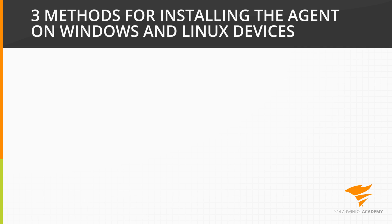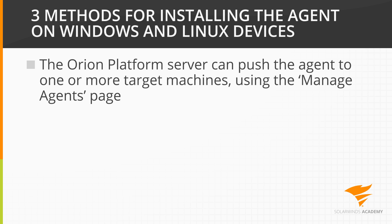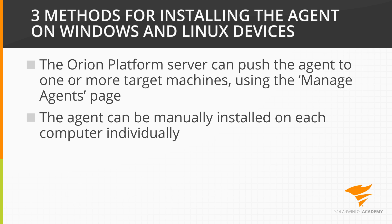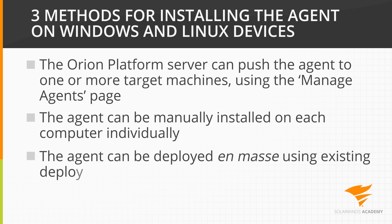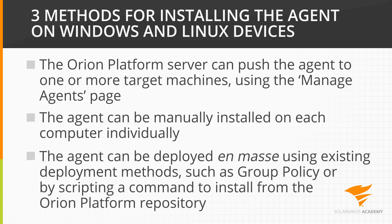There are three methods by which the agent can be installed to your devices. These methods will vary depending on whether you are deploying to a Windows or Linux device. First, you can have the Orion Platform server push the agent to one or more target machines using the Manage Agents page. You can manually install the agent on each computer individually. Or you can deploy the Orion Platform agent en masse by using an existing deployment method, such as group policy for Windows devices, or by scripting a yum or apt-get command to install it from the Orion Platform repository.